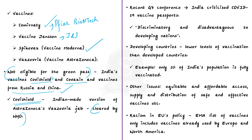The concern is that developing countries have lower vaccination levels compared to developed countries — for example, only 3% of India's population is fully vaccinated, and underdeveloped countries face an even worse scenario. They also face issues with equitable and affordable access to vaccines, as well as problems with supply and distribution of safe and effective vaccines. So implementing a policy that favors a particular vaccinated group is hugely discriminatory.